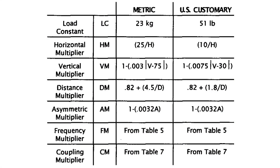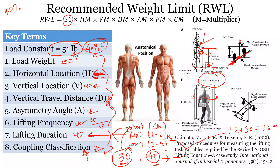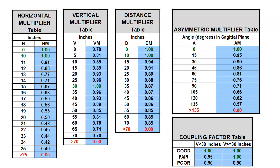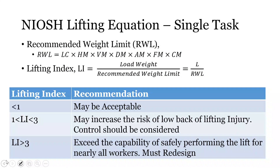Once you have measured all the distances and determined the relevant factors, you use the equation or lookup tables to find the multipliers and calculate the Recommended Weight Limit — the amount someone can safely lift in that posture. A link to the tables directly from the CDC website is provided so you always have the most updated version. For example, if the RWL for a particular posture is 20 pounds and someone is lifting 40 pounds, they are lifting twice the recommended limit.